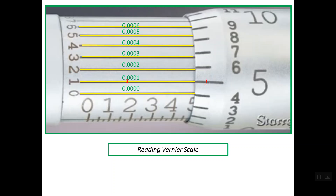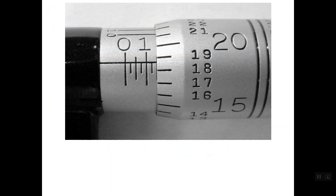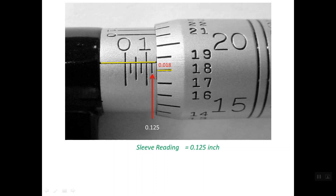Now simply we can read any micrometer. For this first example, the last line visible on the sleeve scale before the edge of the thimble is 0.125 of an inch — that is the sleeve reading. To read the thimble scale, we take the reference line, and the line on the thimble scale below the reference line is line number 18, read as 0.018 of an inch — that is the thimble reading.